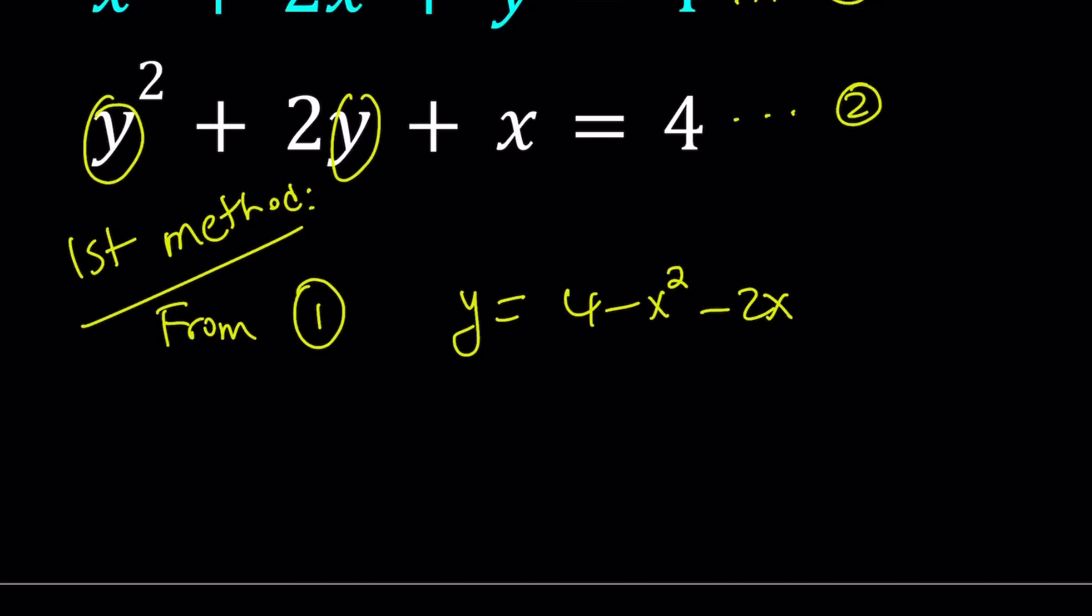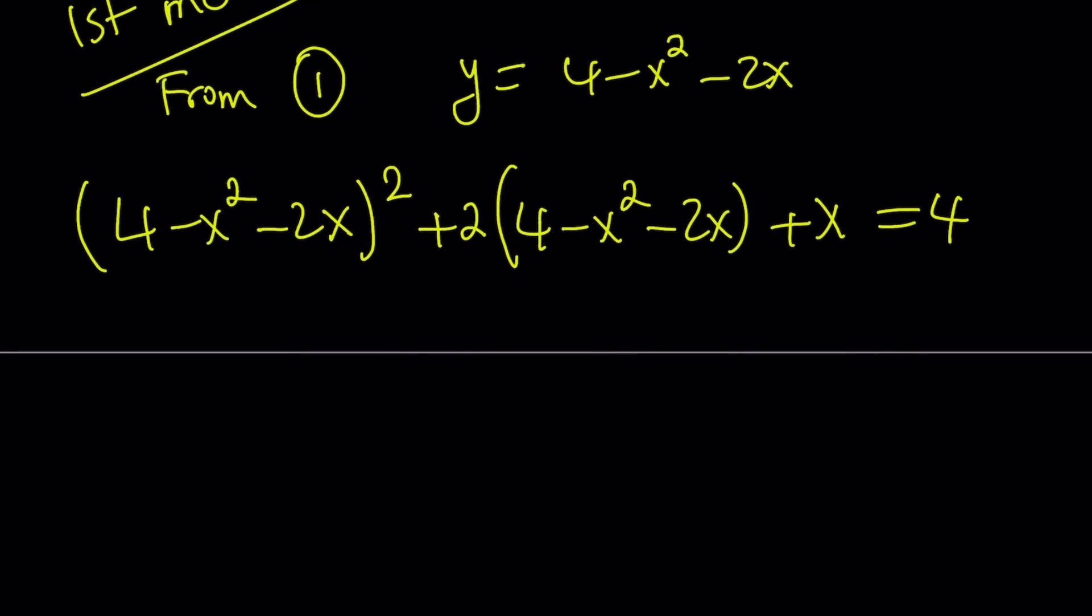Let's replace y with that. 4 minus x squared minus 2x squared plus 2 times y, which is this, plus x is equal to 4. Again, this is how you should not be solving a problem. When you distribute and expand this, simplify and combine like terms, you get the following quartic equation.